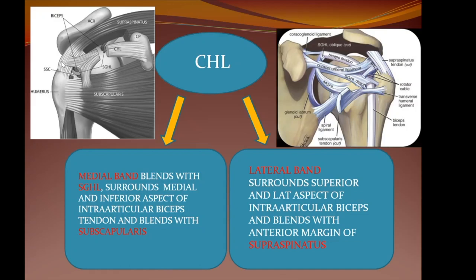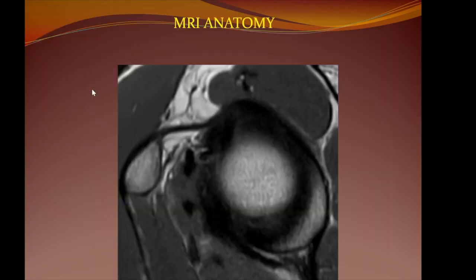The lateral slip has extensions to the anterior margin of the supraspinatus. So the coracohumeral ligament has extensions joining part of the subscapularis and also part of the supraspinatus. Any tear that involves the supraspinatus or the subscapularis will probably extend into the biceps pulley — this is why this explanation is required.